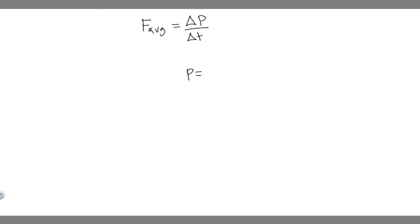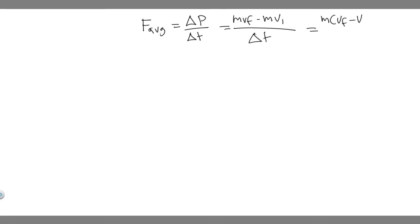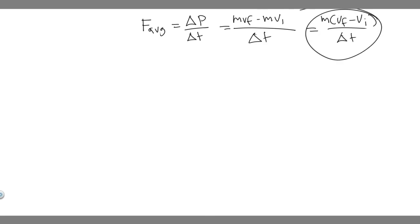If we want to find the change in momentum, it's going to be m times v-final minus m times v-initial — the final momentum minus the initial momentum gives you the change. We can simplify this a bit by factoring out the m, giving us m times (v-final minus v-initial) over the change in time. So this is the formula we're going to use to solve.